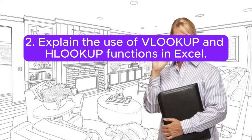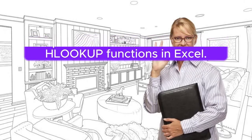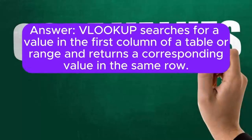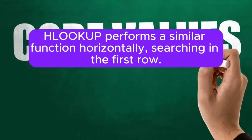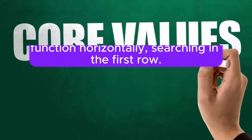Question 2: Explain the use of VLOOKUP and HLOOKUP functions in Excel. VLOOKUP searches for a value in the first column of a table or range and returns a corresponding value in the same row. HLOOKUP performs a similar function horizontally, searching in the first row.